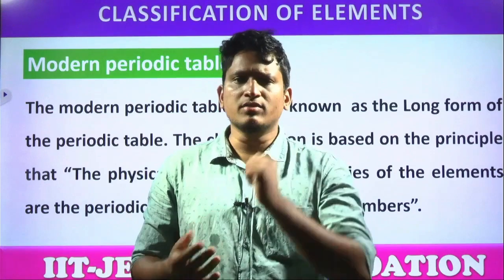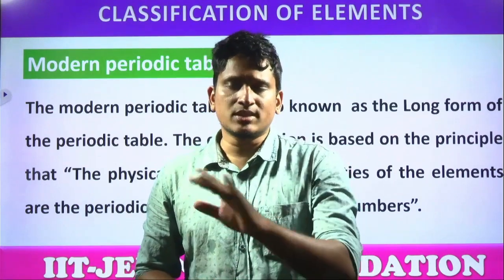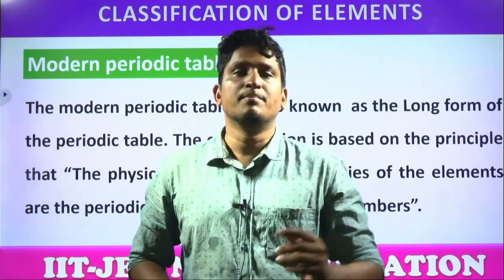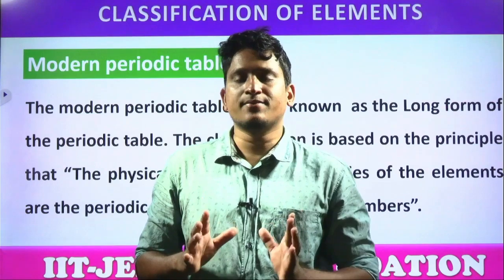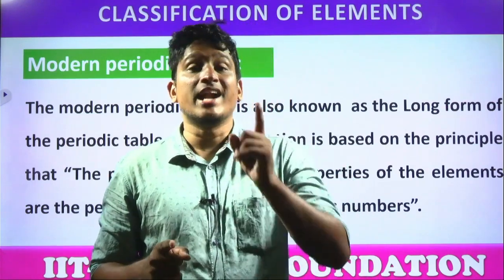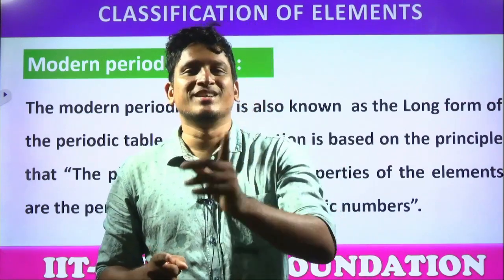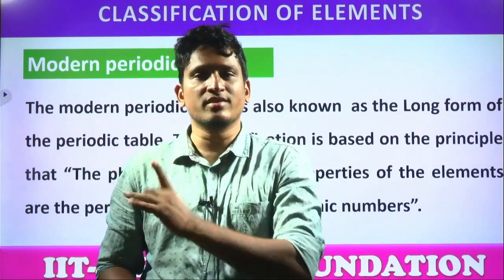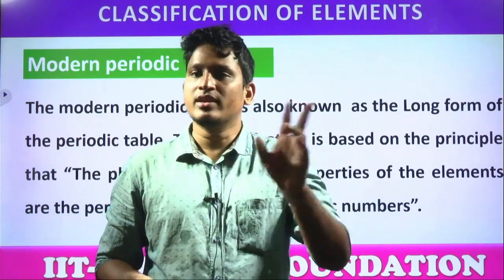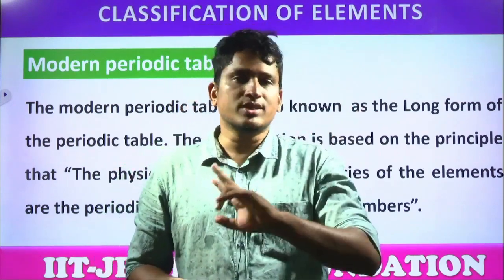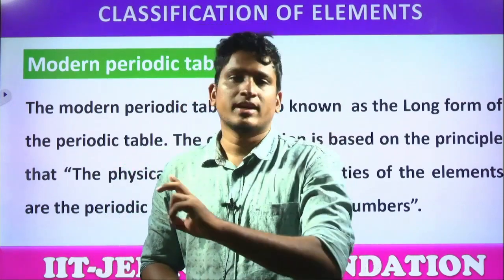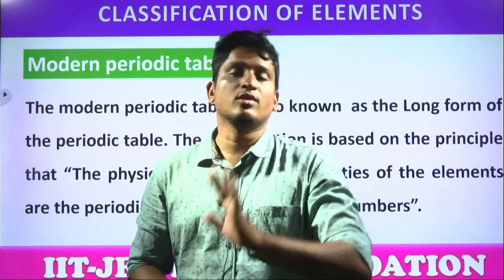So what do you think — what is the best way to classify all these elements? The best way to classify all these elements is atomic number. What is atomic number? The number of protons in an atom. There is no chance that different elements can have the same atomic number.